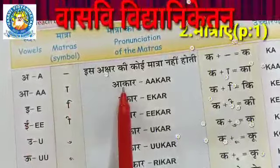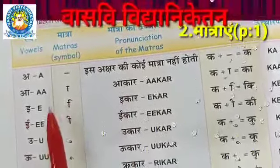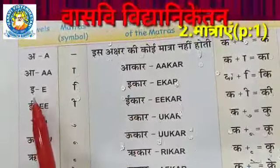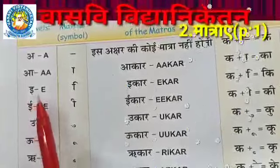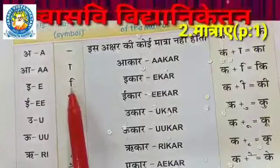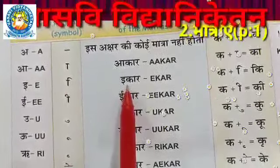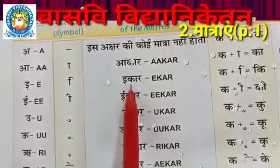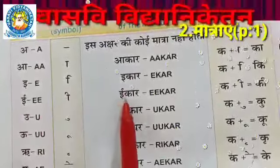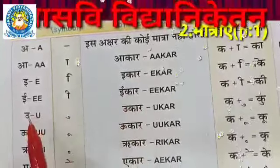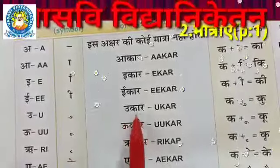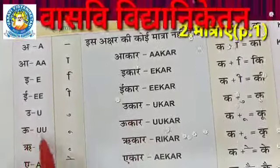A ki maatra ko kya bolte - akar. Yeh chhoti e - chhoti e ki maatra ikar. Left side ki taraf rasthe - chhoti e ki maatra ikar. Badi e ki maatra ikar. Chhoti u, chhoti u ki maatra - badi u, badi u ki maatra.